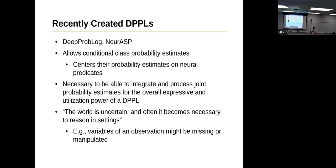Recently created DPPLs include DeepProbLog and NeurASP. Both of them allow conditional class probability estimates where they center their estimates on neural predicates. They're necessary to be able to integrate and process for the overall expression. The reason being, as the paper explains, is that the world is uncertain and often it becomes necessary to reason in settings where variables of an observation can either be missing or manipulated.